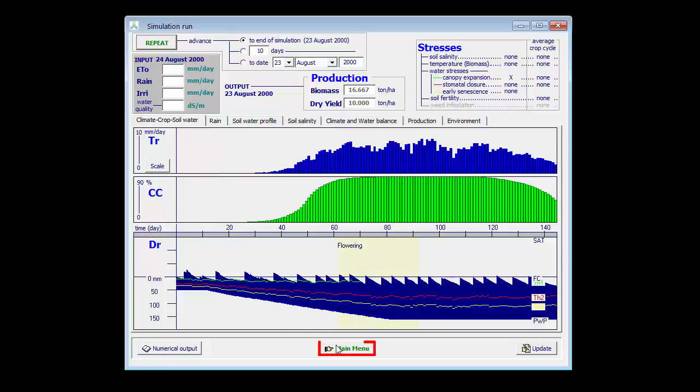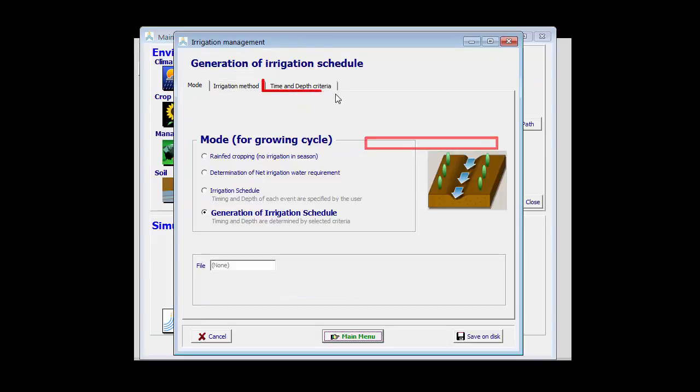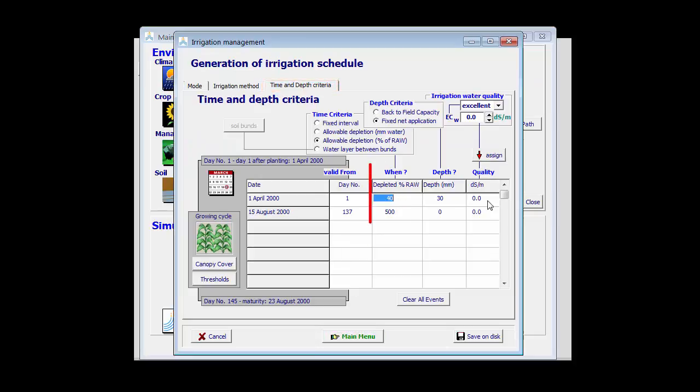I return to my main menu, I go back to my irrigation schedule, and I specify that starting from day one, irrigations are only triggered when the root zone depletion reaches 100% rho.